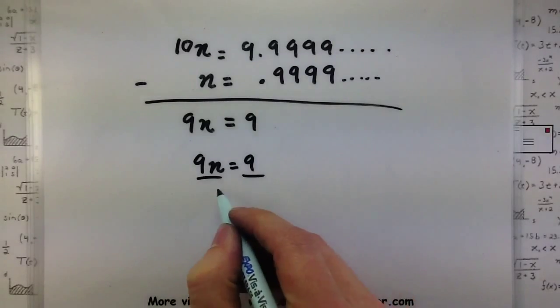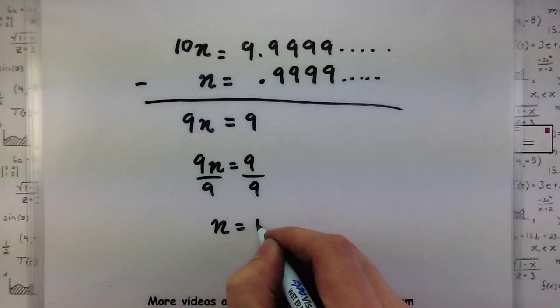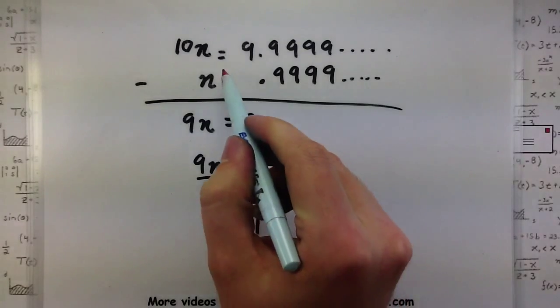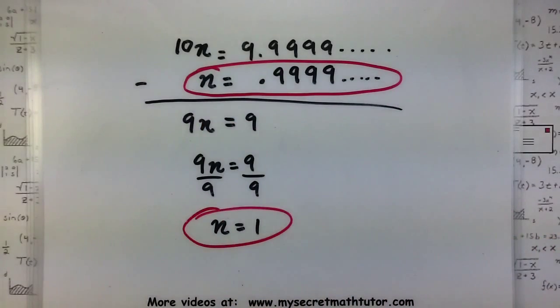And what's left over is I have a simple equation that I could then solve for my number. Maybe divide both sides by 9 and I get that n is equal to 1. And you might be saying, great, n equals 1, but what does this really show? That's exactly what my original number was. So it shows that 1 is indeed 0.999 repeating.